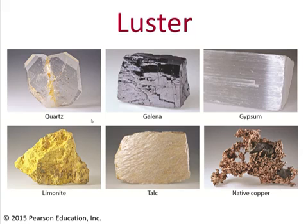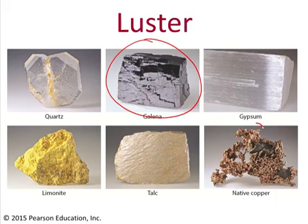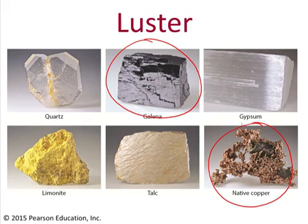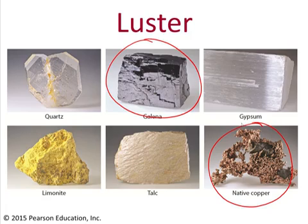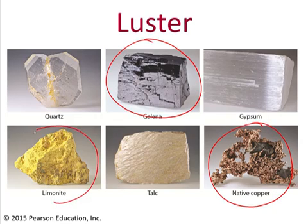Another characteristic of minerals is how they reflect light. Some examples of that are shown here on the screen. One of the most obvious differences in the way that minerals reflect light is that some minerals reflect light in a metallic fashion. So in this image here we've got galena and native copper. Both of them look like metals — obviously one has more of a coppery tone and one more of a silvery tone, but they both reflect light in a metallic way.